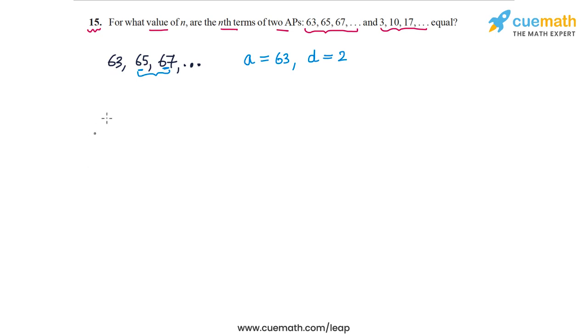And for the second AP, the first three terms are 3, 10, 17 and the AP continues this way. So the first term of this AP, let's represent it as a dash, is 3. And the common difference of this second AP, you can take the difference of 10 and 3, so that's equal to 7.